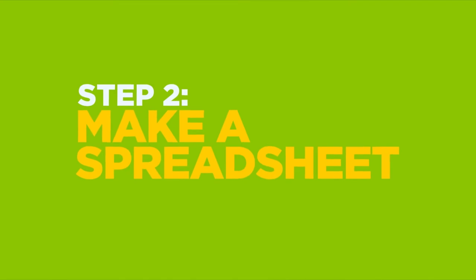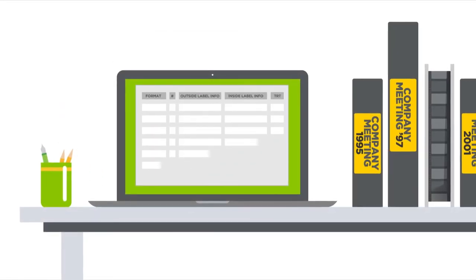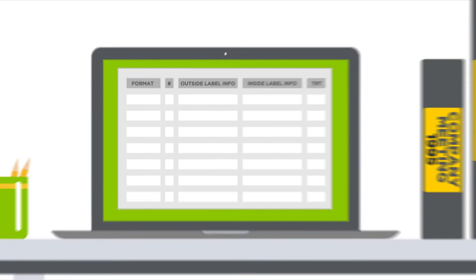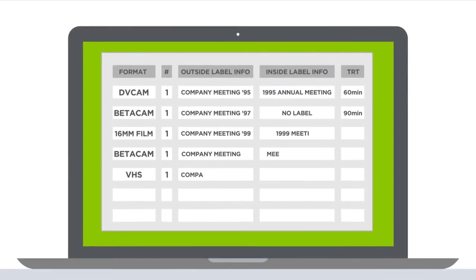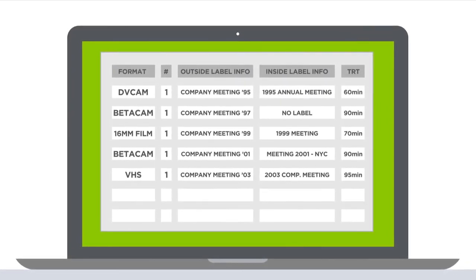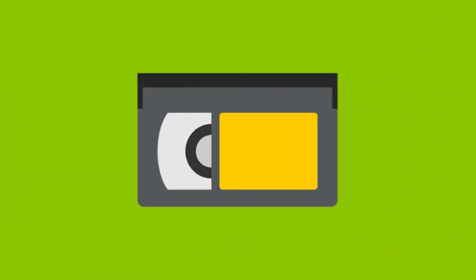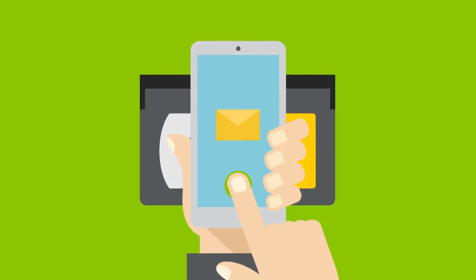Step 2: Make a spreadsheet. Record the tape format and all the label information, inside and out, from each tape. We'll use this to help estimate the cost of your project. If you're unsure of a tape's format, send us a picture — we'll be happy to help you figure it out.